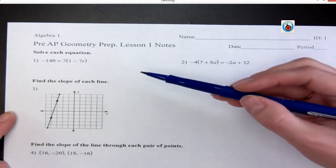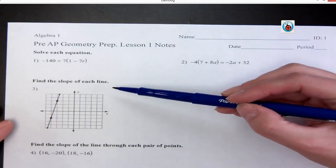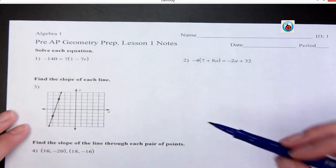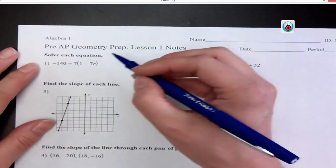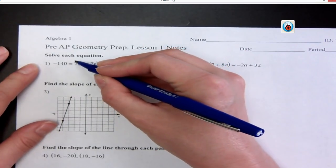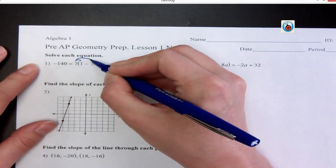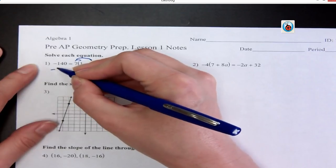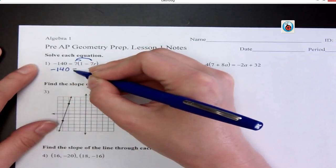Okay, so today we're going to review solving equations, finding slope, and writing the equation of a line. So, first step, we're going to distribute. Okay? So anytime you have parentheses, you distribute first.